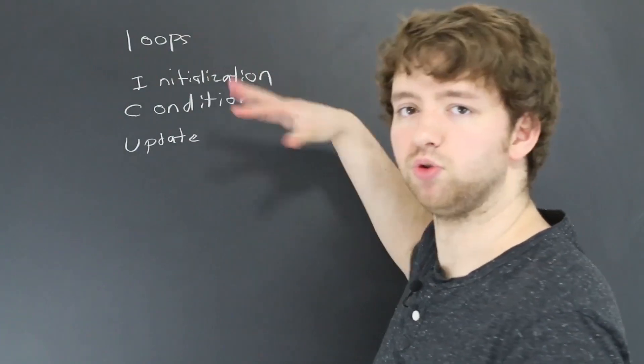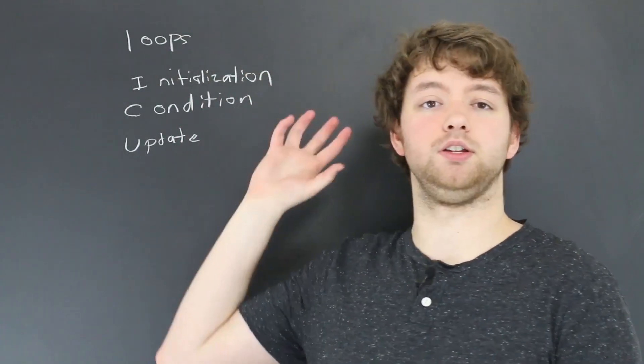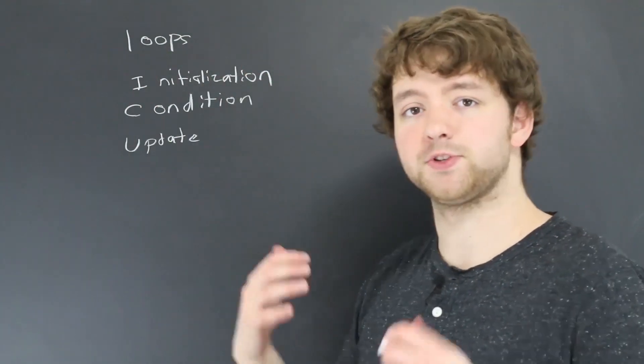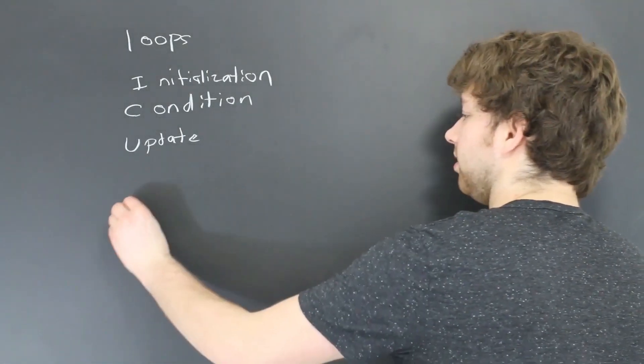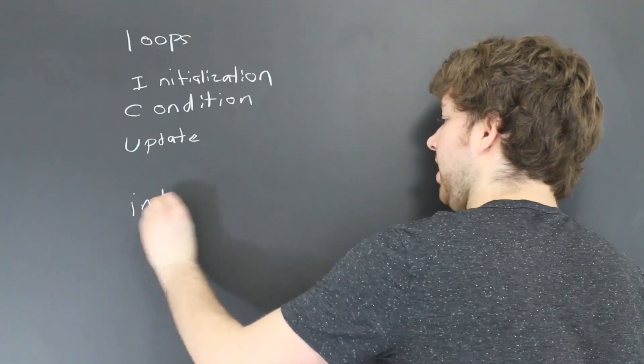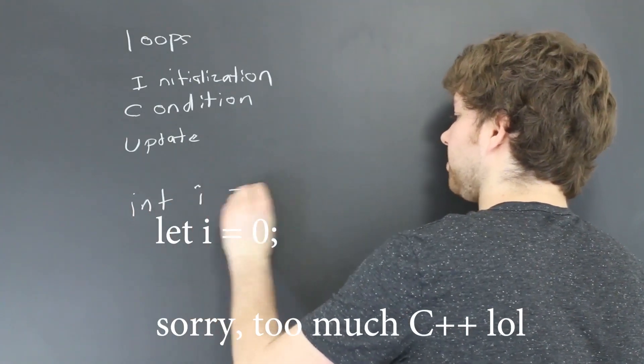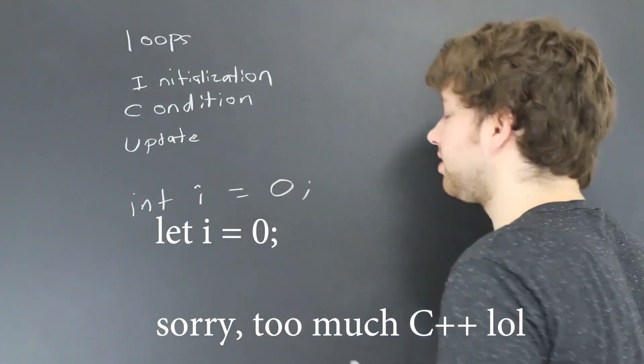So yeah, a bunch of conceptual words and garbage that aren't that important until we go through an example. So let's talk about a while loop. The way this works is we're going to start with a variable. Let's just call it i, and we'll set that equal to zero.